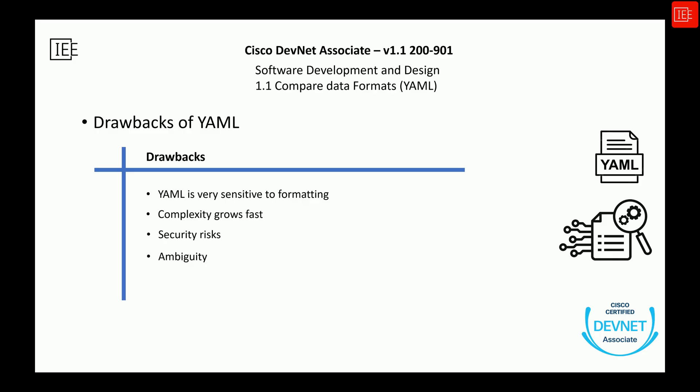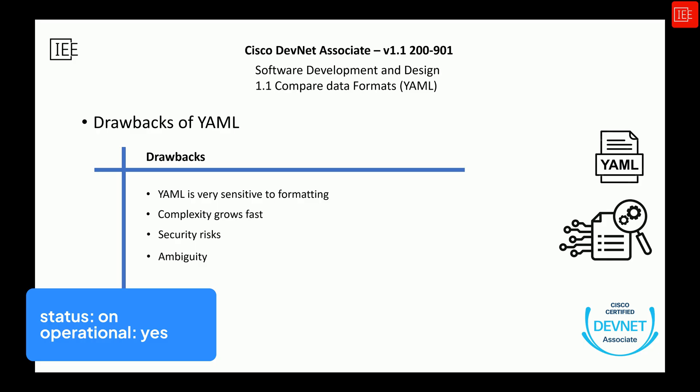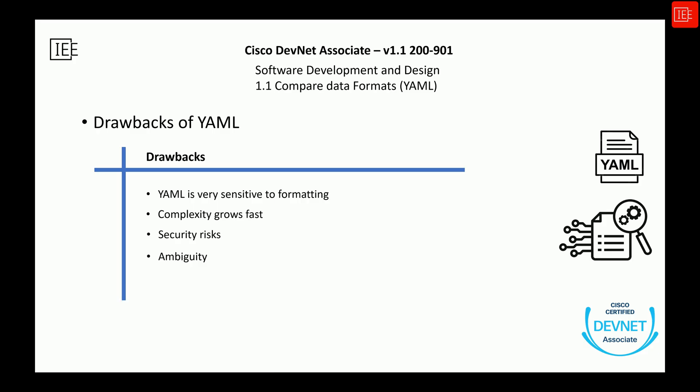The fourth drawback is that YAML tries to be smart in how it interprets data types, but that can backfire. For example, if you write yes, no, on, or off, YAML might automatically treat those as boolean true or false values instead of strings, even if you meant them to just be normal words. You have to be extra careful with quoting values properly, otherwise you can get unexpected results. Finally, while YAML is fantastic for humans to read and write, it's a little heavier for machines to parse compared to JSON.